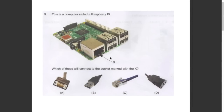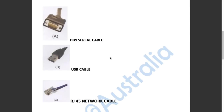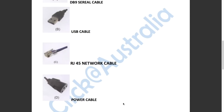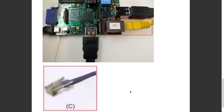This question asked us which of these will connect to the socket marked with the X. Option A is a DB9 serial cable. Option B is a USB cable. Option C is a RJ45 network cable. Option D is a power cable. So the answer has to be C.